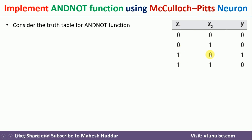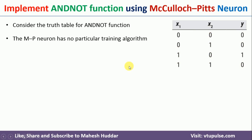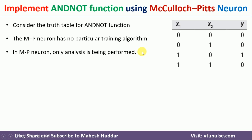In all other cases it should not fire. We know that the MP Neuron has no particular training algorithm, so we need to do some analysis to find optimal weights as well as a threshold value so that the neuron will fire only in this particular case.